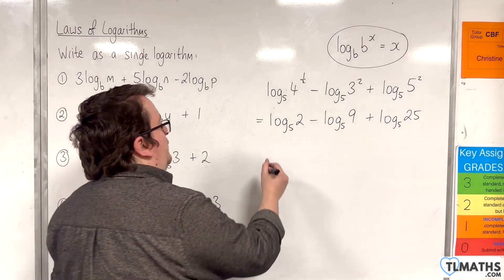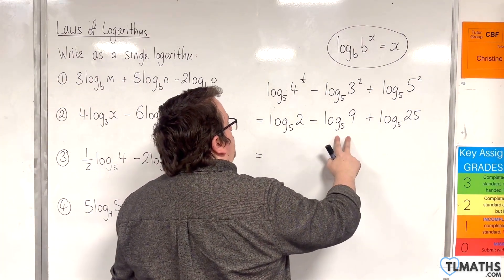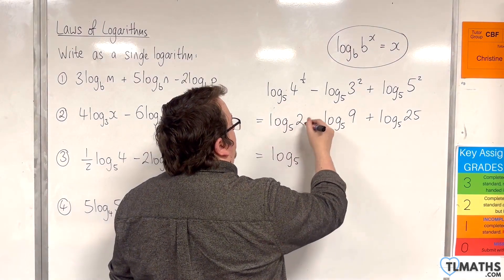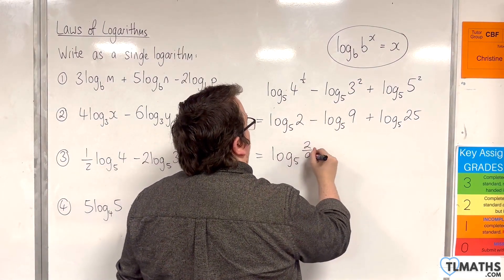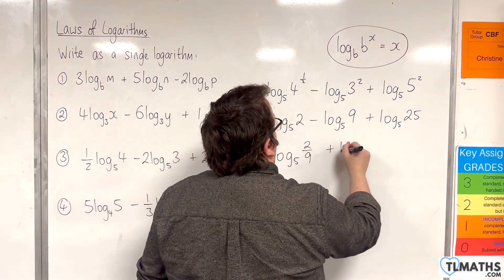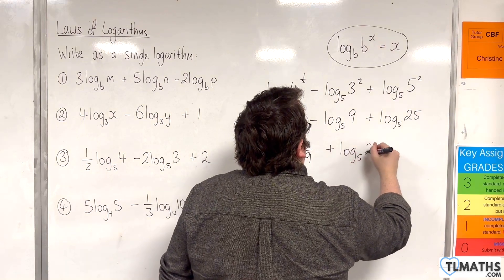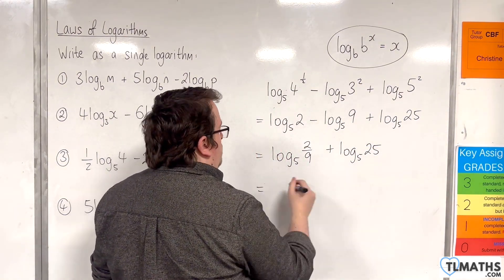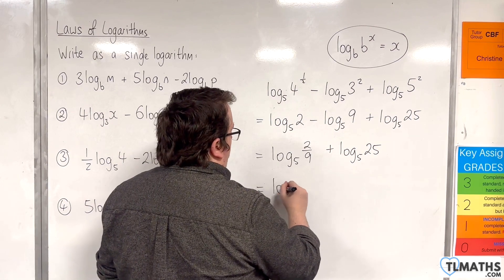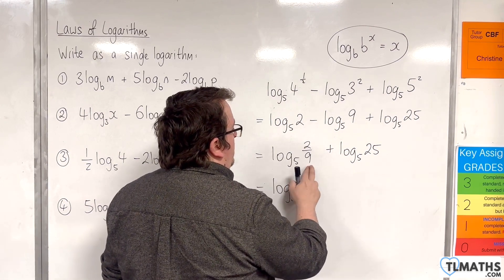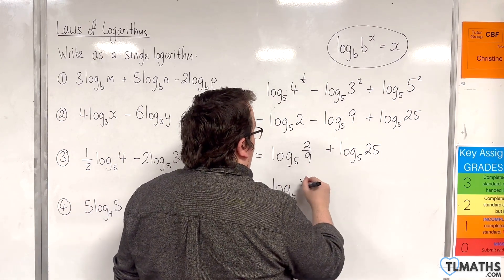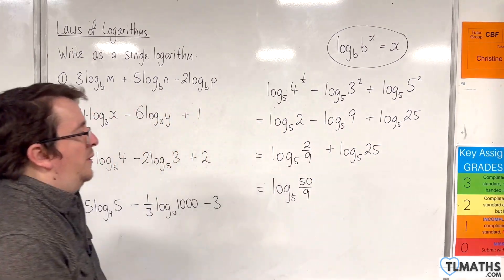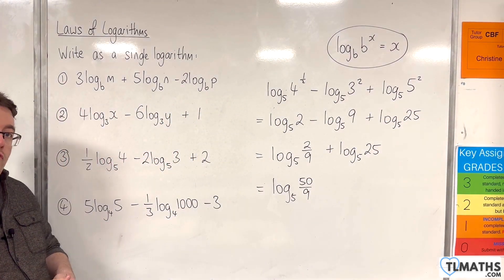So working from left to right, let's use the quotient rule first: log base 5 of 2 over 9. And now we can use the product rule: log base 5 of two-ninths times 25, which gives us 50 over 9. And so that is now written as a single logarithm.